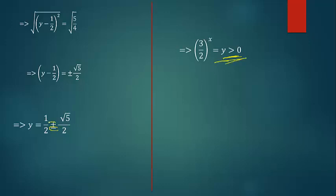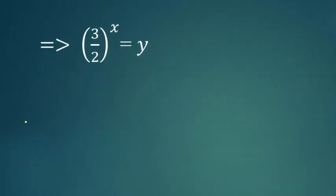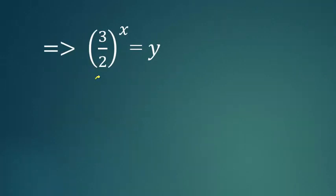We are going to proceed by writing this as y = 1/2 + √5/2 = (1 + √5)/2.